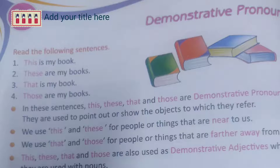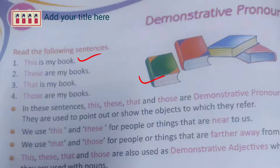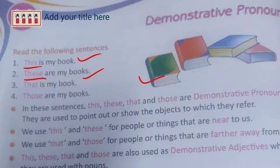Let us see some examples. 'This is my book.' Here, 'this' is singular, and it refers to the book. 'These are my books.' 'These' is plural and refers to books. So demonstrative pronouns are used to point out or show the objects to which they refer. We use 'this' and 'these' for things that are near, and 'that' and 'those' for things farther away. 'This' and 'that' for singular; 'these' and 'those' for plural.